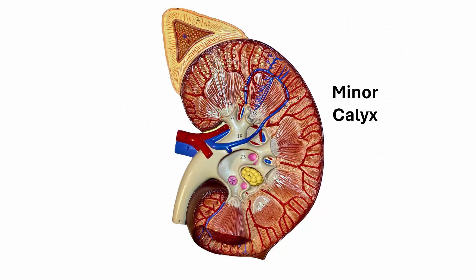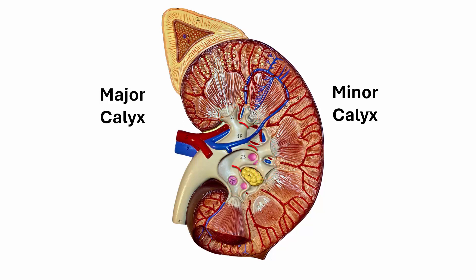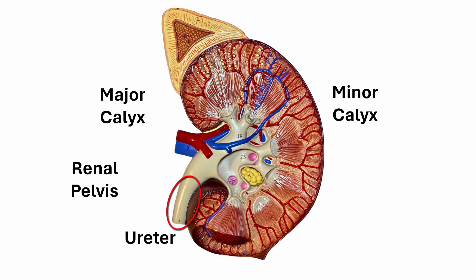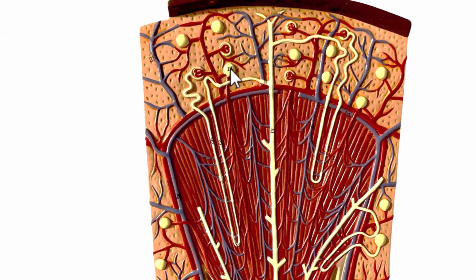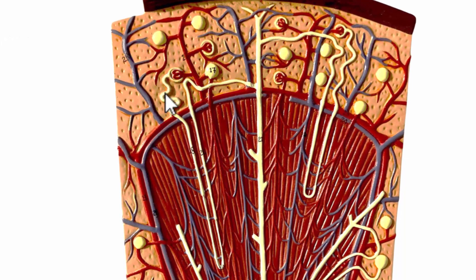Once again, we have draining from the renal pyramids into the minor calyx, next into the major calyx, then into the renal pelvis, and then the renal ureter. Now taking a closer look at the pyramids — this is one of the pyramids, this is the renal cortex, and this is the renal capsule. The functional unit of the kidney is called the nephron. The nephrons are these structures where you see a little circle and tubes that dip down and attach to a collecting tube.